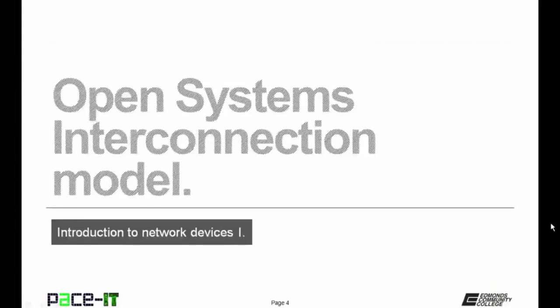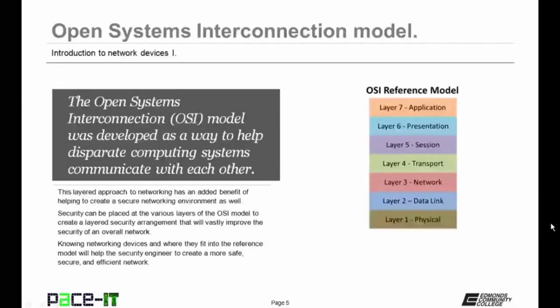I'm going to begin by talking about the Open Systems Interconnection Model. The OSI model was developed as a way to help disparate computing systems communicate with each other. It created a seven-layer approach to networking. This layered approach not only allows those disparate systems to communicate with each other, but it has the added benefit of helping to create a secure networking environment as well.